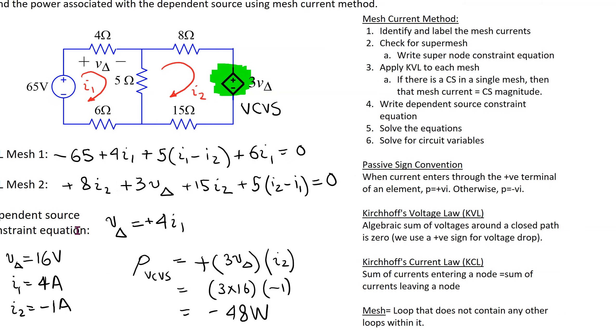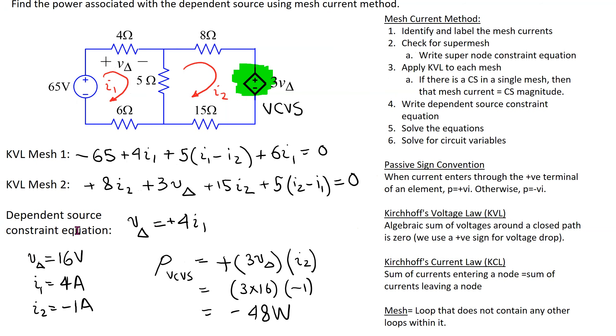We can compare the solution using the conventional mesh current method technique so we can identify two mesh currents I1 and I2. These are arbitrarily chosen as clockwise shown here. And then we can apply KVL to mesh 1 and mesh 2 and write the dependent source constraint equation. Please pause the video here and compare with the equations we obtained previously when we had one mesh current and one loop current.